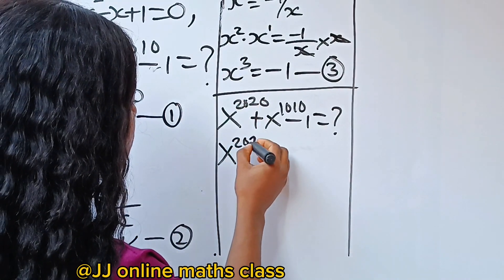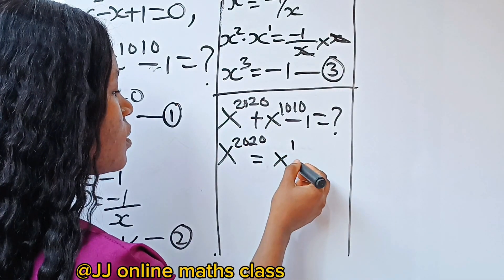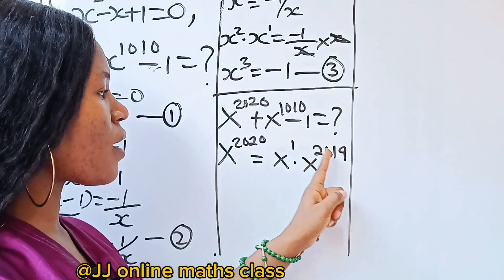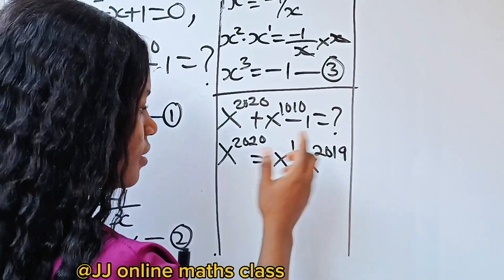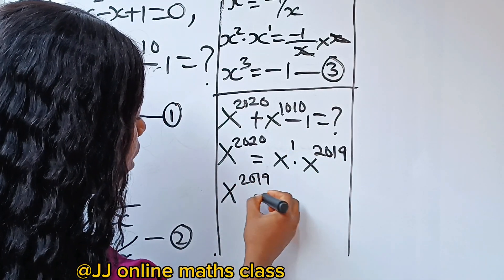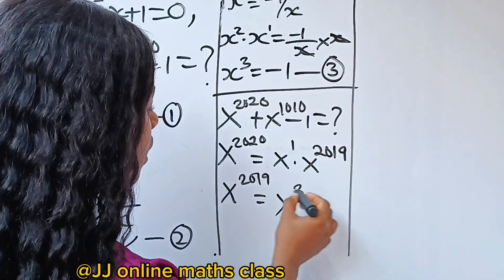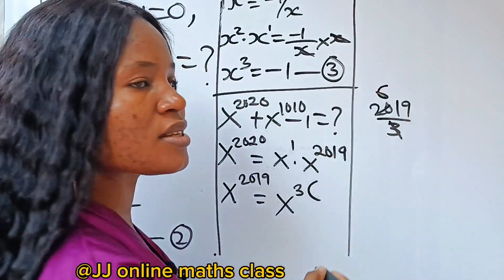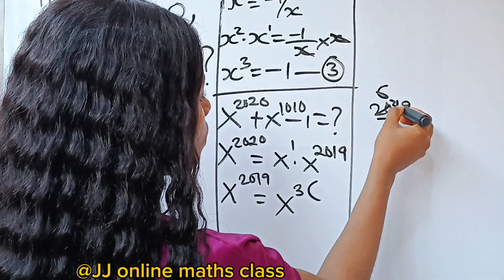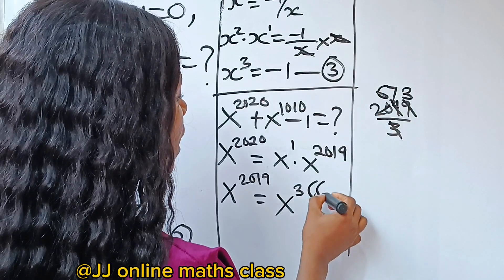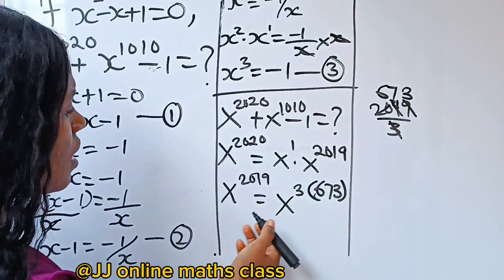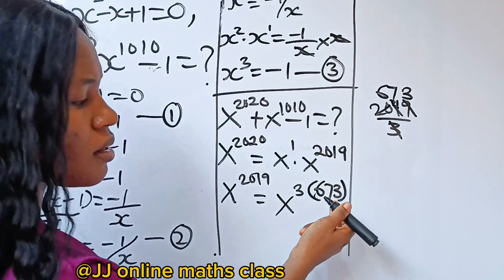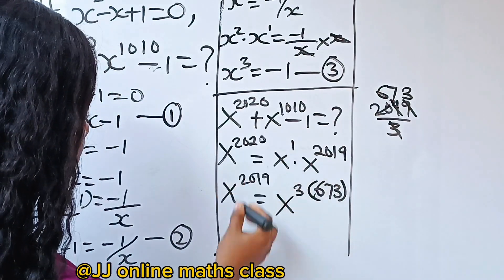x to the power of 2020 can be written as x to the power of 1 multiplied by x to the power of 2019. Now 2019 divided by 3: 3 divides 20 giving 6 remainder 2, divide 21 giving 7, divide 9 giving 3 — so 2019 equals 3 times 673.